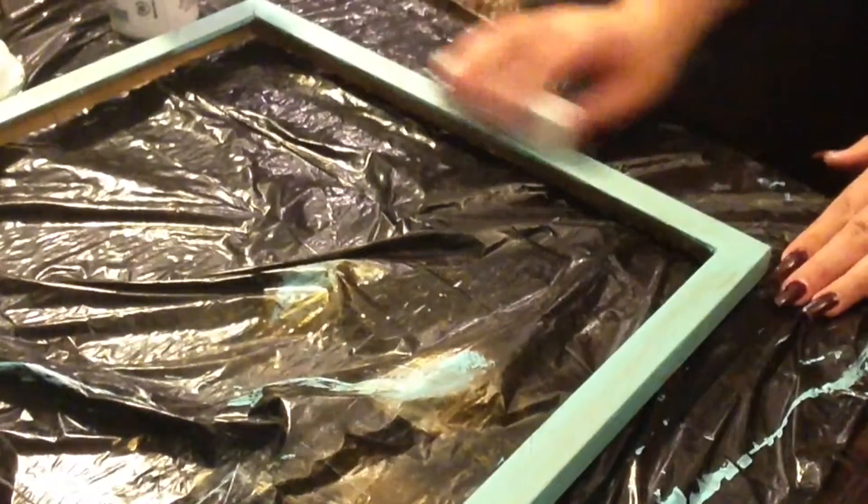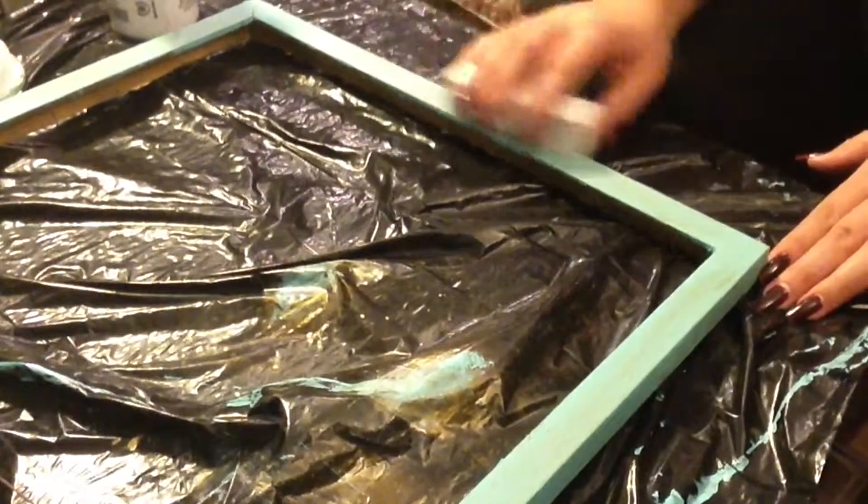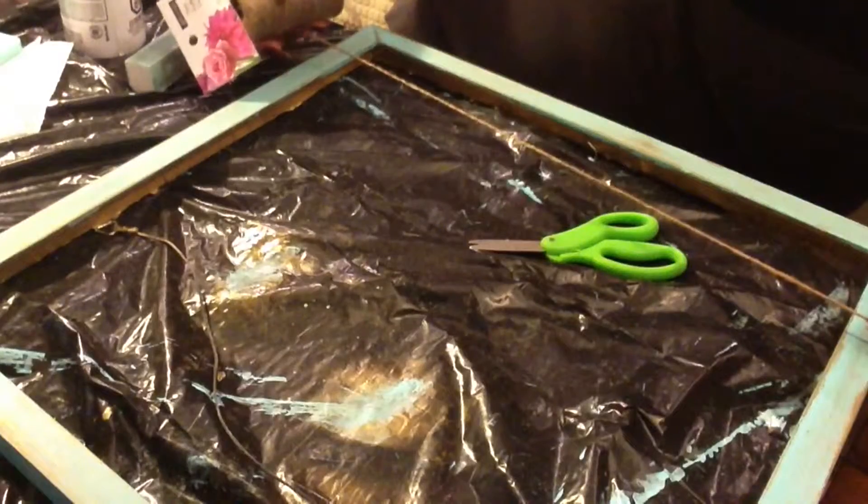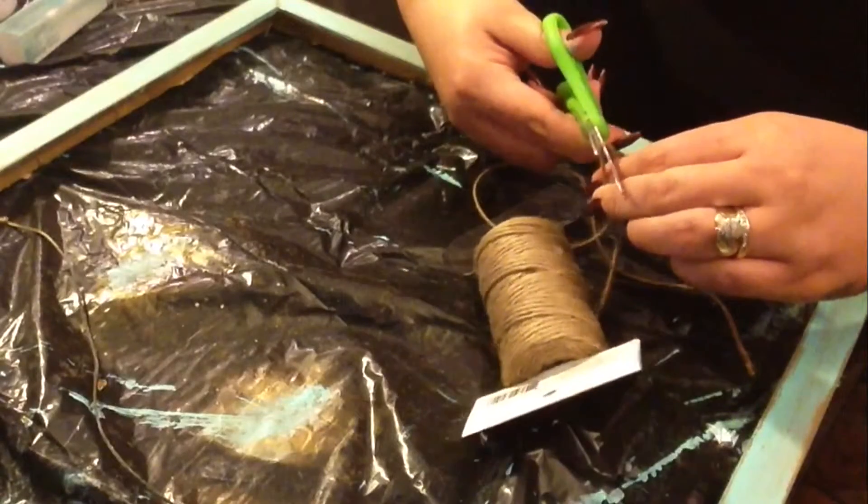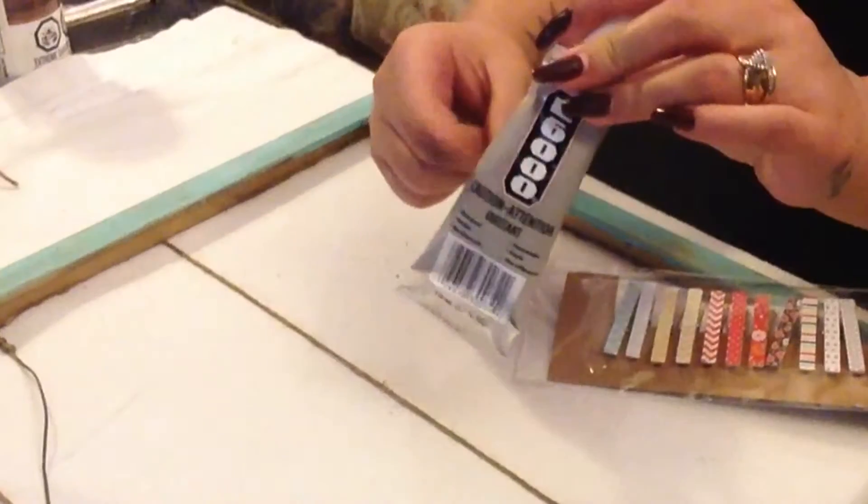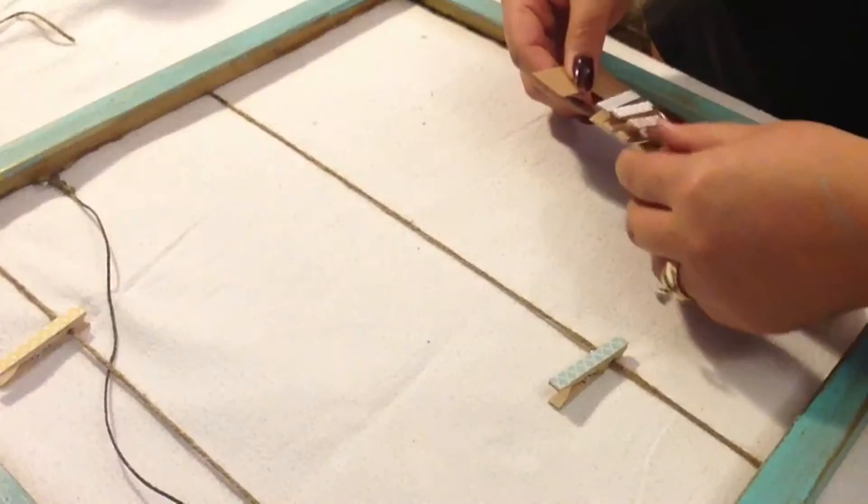So it would give you that rustic look and you can see the gold shining from under it. Measure out my burlap yarn stuff. I tried to use the E6000 to attach it and it just didn't work.